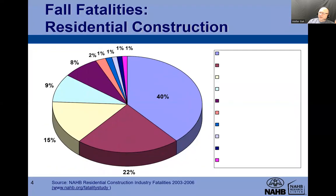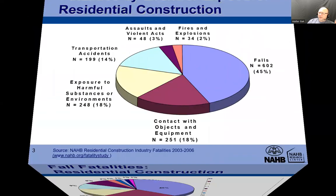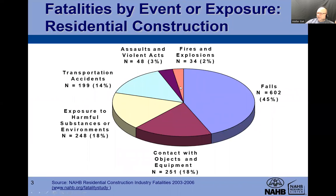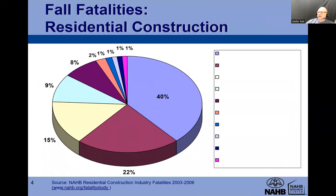The next slide talks specifically about falls. We're going to take this piece of the pie chart and analyze it — what kind of falls we're talking about. Fall fatalities in residential construction: falls from stairs or steps, about 6. Falls from the same level, about 7.